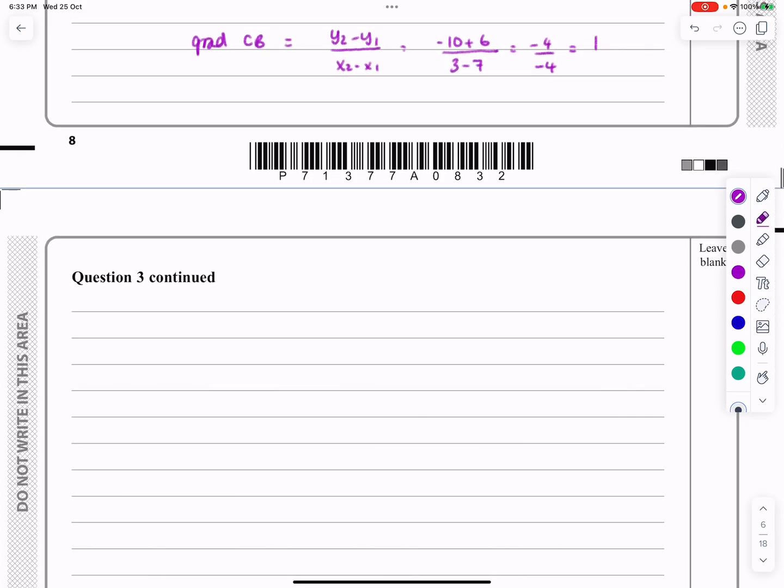Now, just because I need to be really quite strict with what I'm saying here. So I'm going to say since the gradient of AC multiplied by the gradient of CB equals -1. Therefore, the two lines are perpendicular.